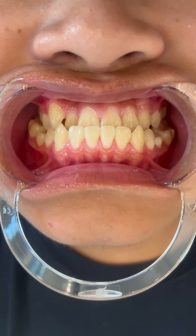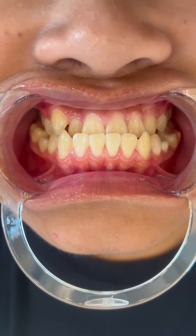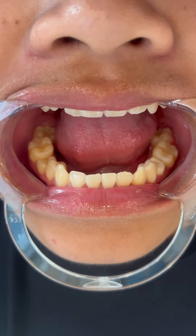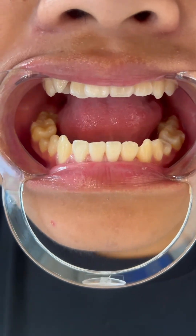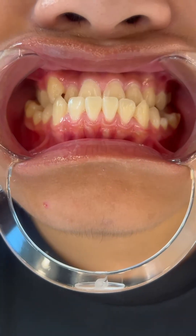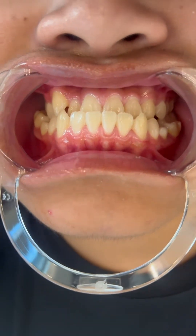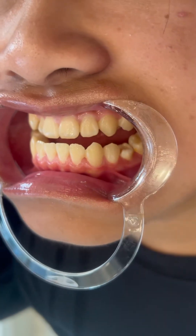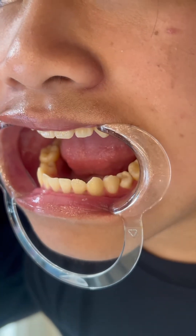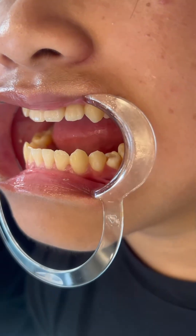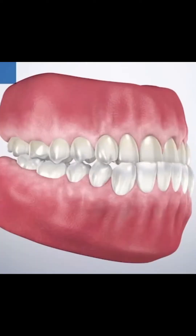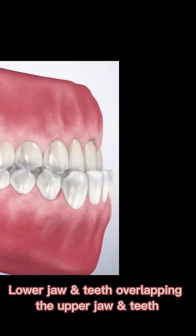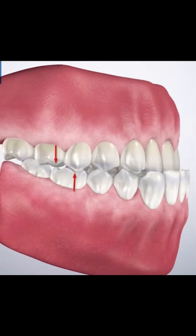People who have class III malocclusions may have teeth positioned edge to edge or with a reverse overjet. This type of malocclusion can have consequences like difficulty chewing and prematurely worn teeth. Here we can see the lower jaw and teeth overlapping the upper jaw and teeth.